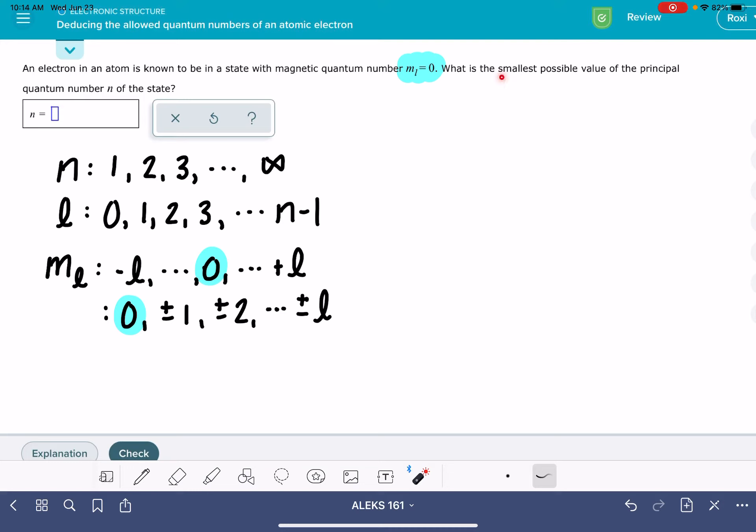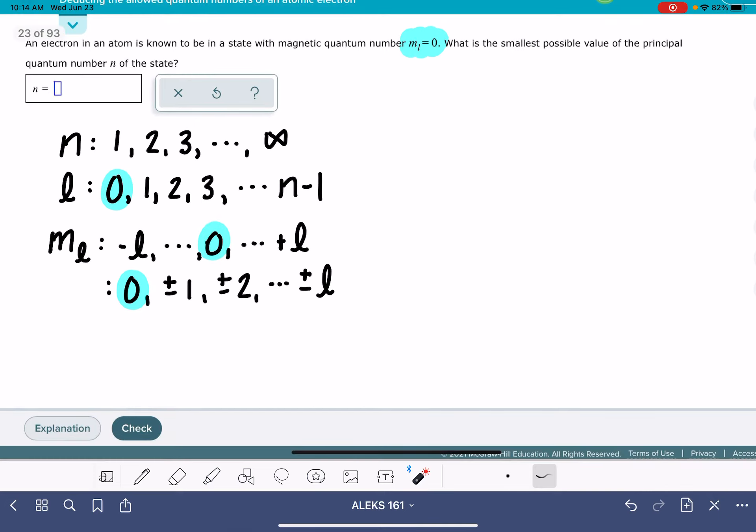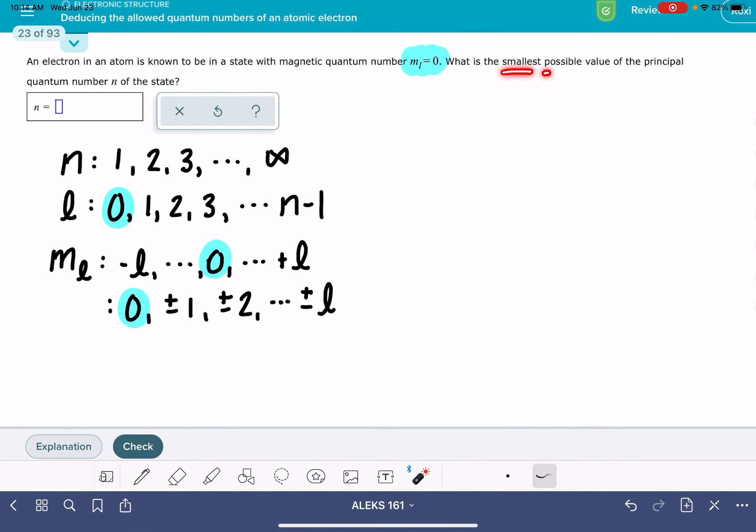And I'm trying to come up with the smallest possible value. So if I have an m_l equal to zero, the smallest possible value of l is also just going to be zero. No matter what the value of l might be, m_l equals zero is going to be a possibility all the time. It's always an option. But I'm looking just for the smallest possible value.